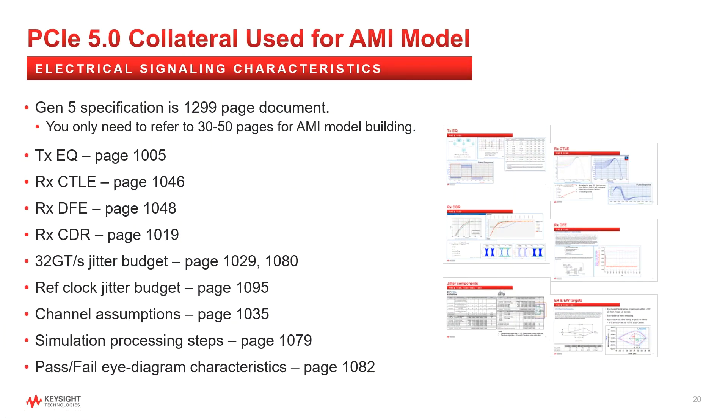Let's take a closer look at the particular specification items that go into an IBIS-AMI model. Out of the 1299 page document, only about 30 to 50 pages were referred to for the AMI model building. The electrical specification topics are listed here to the left, along with their page number in the base specification for future reference.